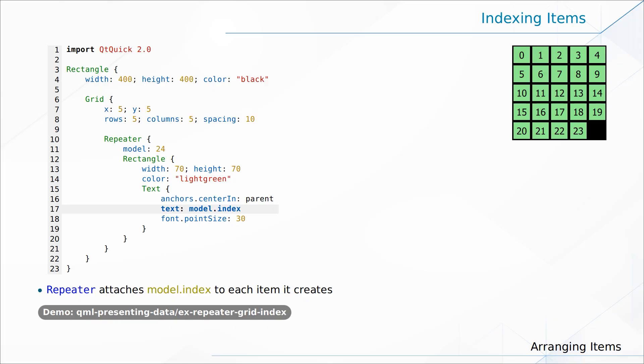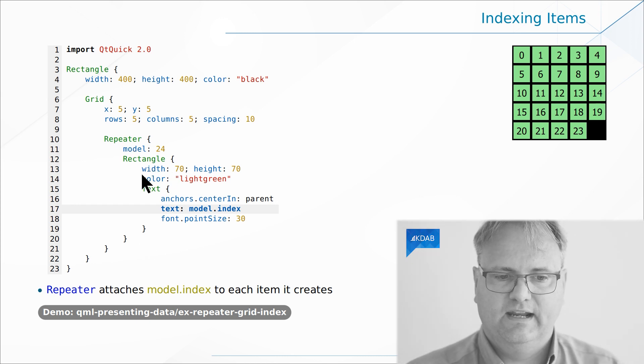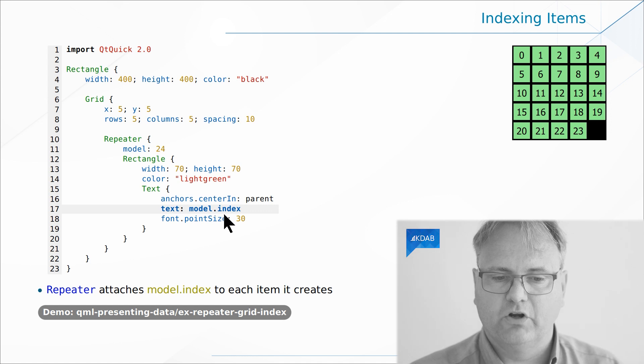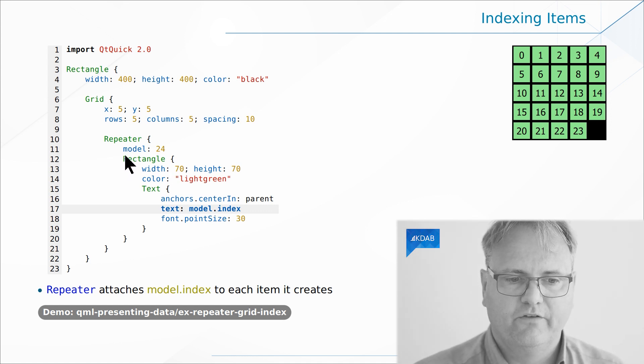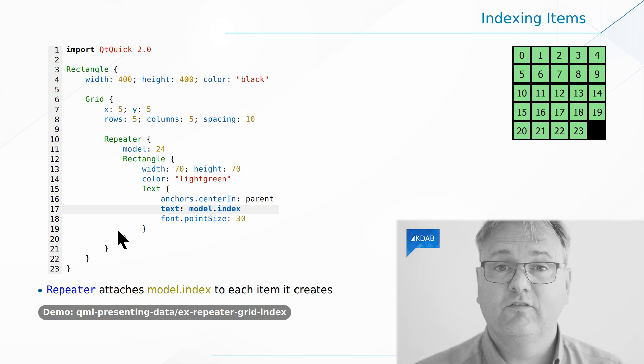Model.index. We've seen it a few times. Model.index is an attached property. Model is the attached property. If you go and look at text element, there are no specific model properties on the text element. Text is inherited from item. Item does not have a model either. So, whenever I use my text element as a child of my repeater, then the repeater with all of the elements that it instantiates will add model.index on each of them. And while we're looking at it, observe that it doesn't say delegate colon anymore. It just says rectangle right here. And that's because delegate is a default property. And with default properties, I do not need to specify them.